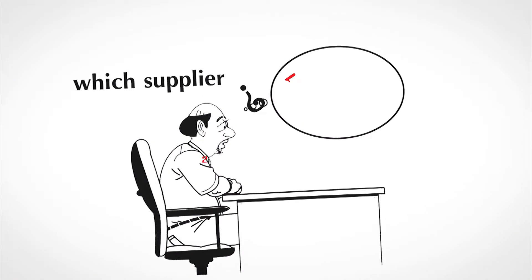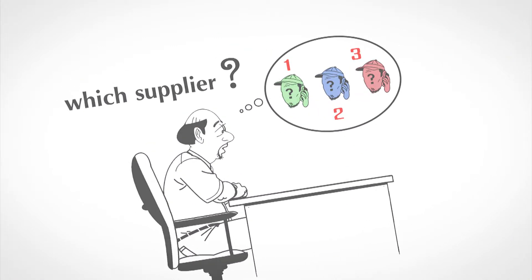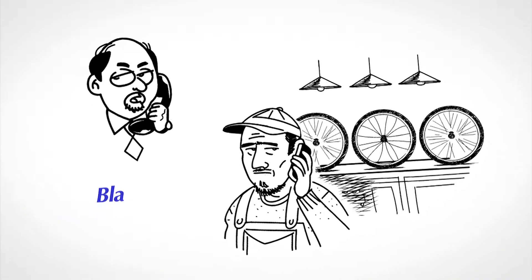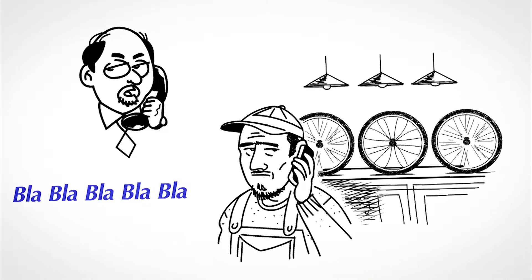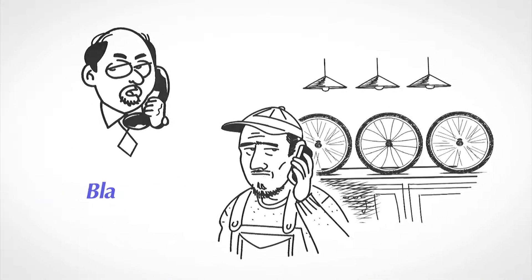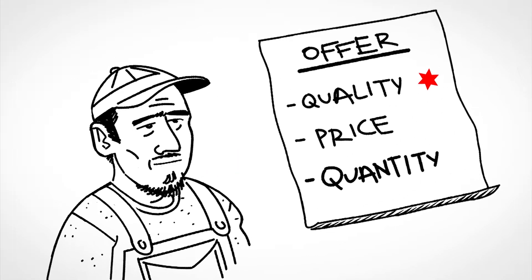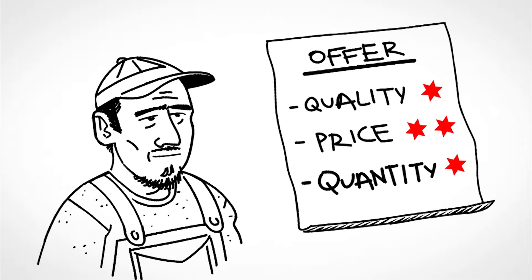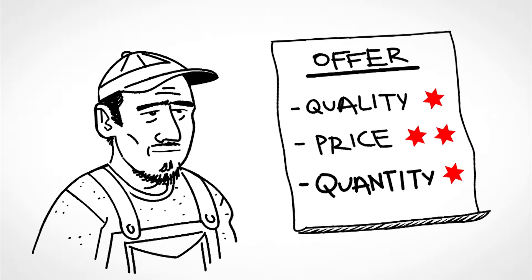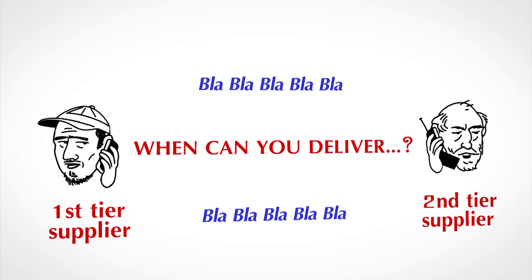Then, Mr. Lopez has to choose the right suppliers for each part and plan the production of the bicycle. He picks up his phone and starts contacting suppliers for the different parts. A specific offer sheet is sent to every first-tier supplier to fill in, and in order to respond, each first-tier supplier needs also to contact his own suppliers.